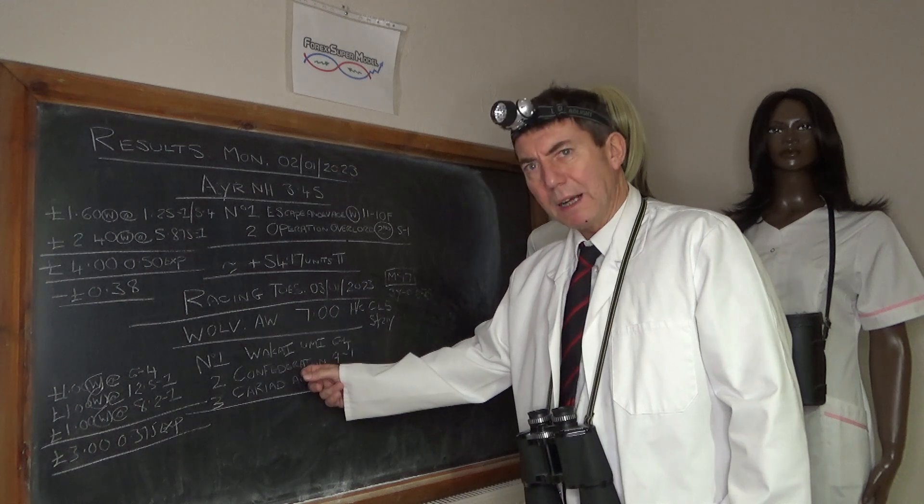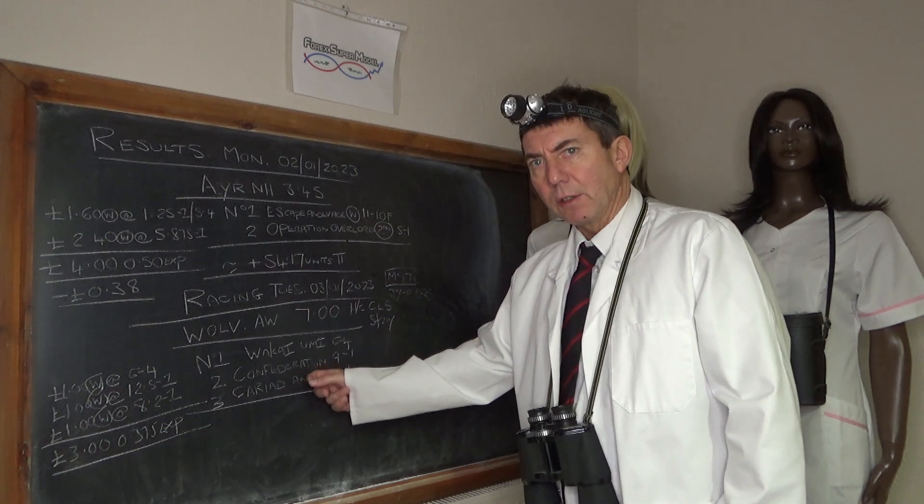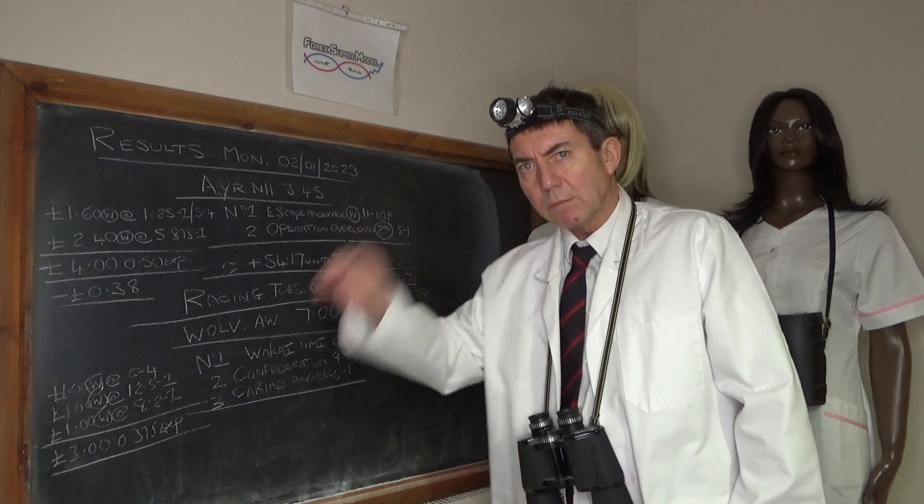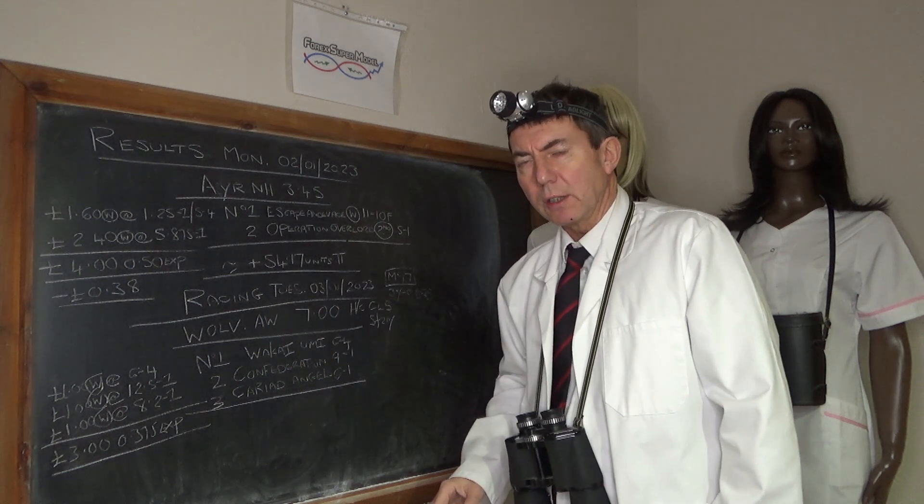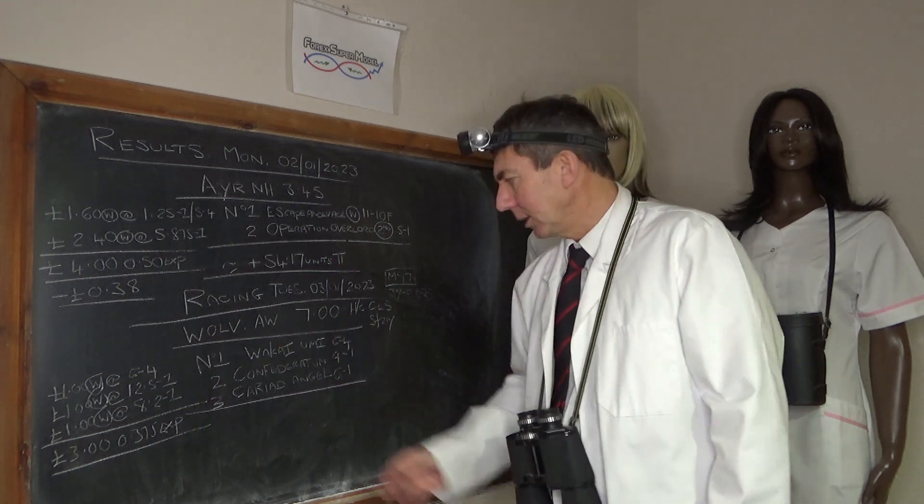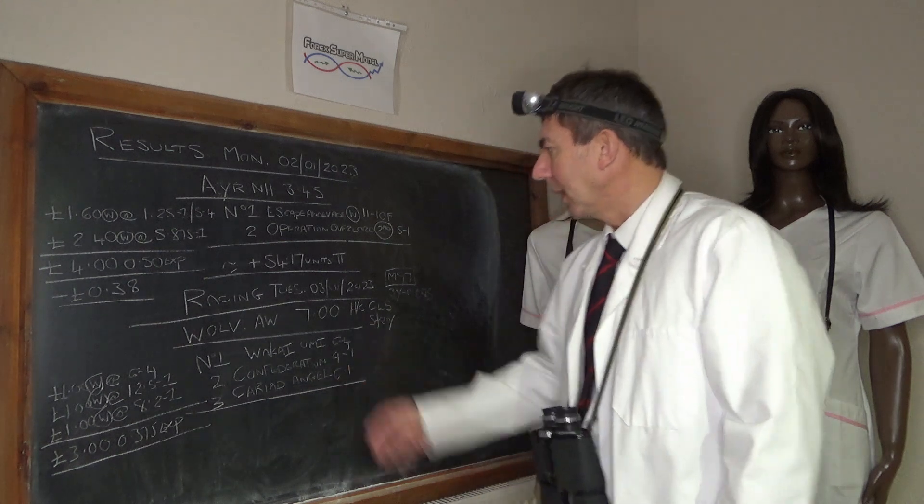Confederation is bang there at the distance, if you look at its previous races, and Cariad Angel has had some easy trips, but it sort of ramps up and has a good, it's a class A mover, A grade mover, so it's got potential as well, and decent odds. So we'll see how we go with that.